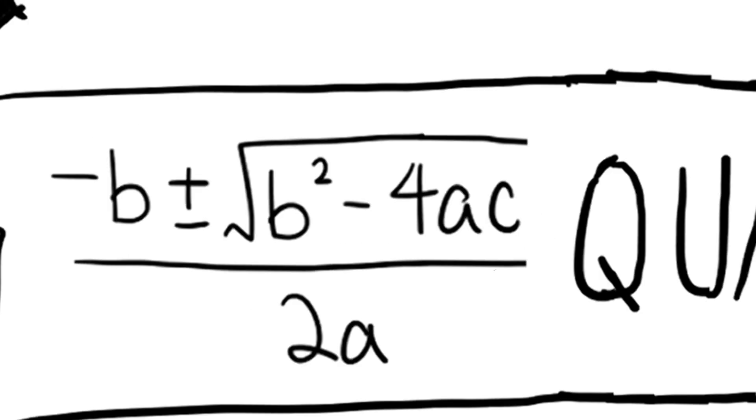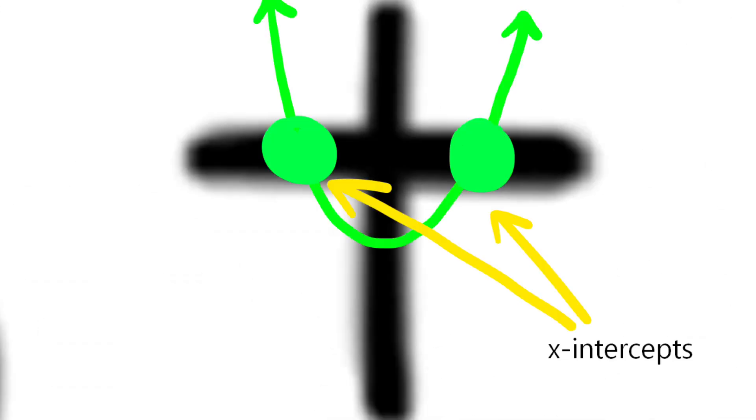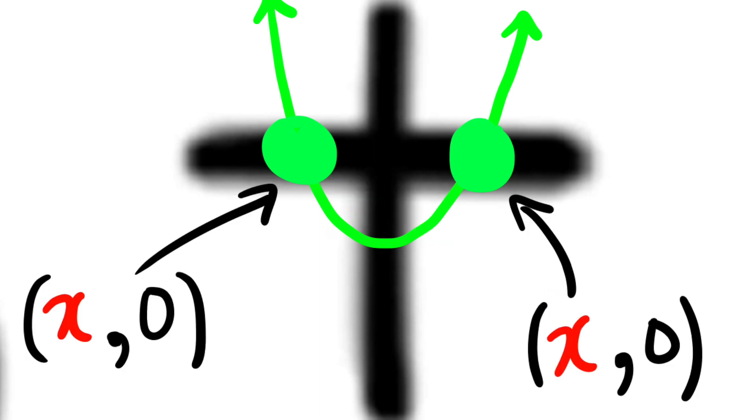So then what does the quadratic formula mean? Well, let's say we have a quadratic function with two x-intercepts. The quadratic formula would give us the x-coordinate for these coordinate points.